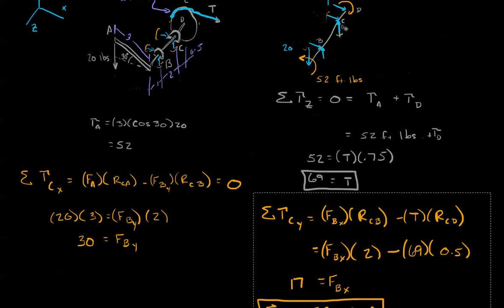We're good with that. And then in the negative direction, you're going to have the tension times this radius. Well, we plug in our numbers, we find out that the force at B in the x direction is 17 pounds.